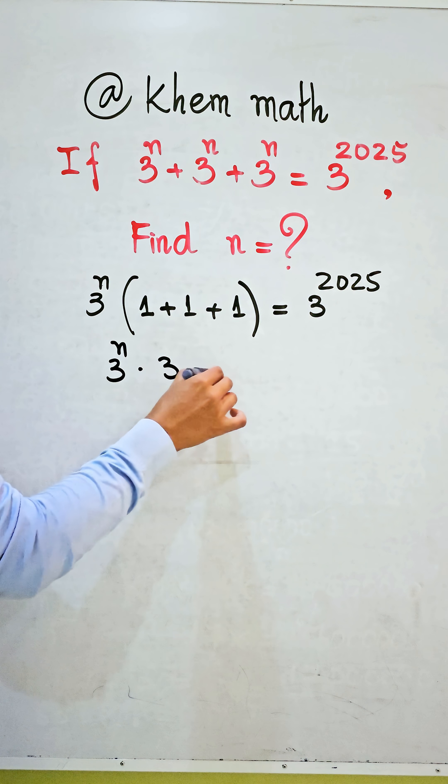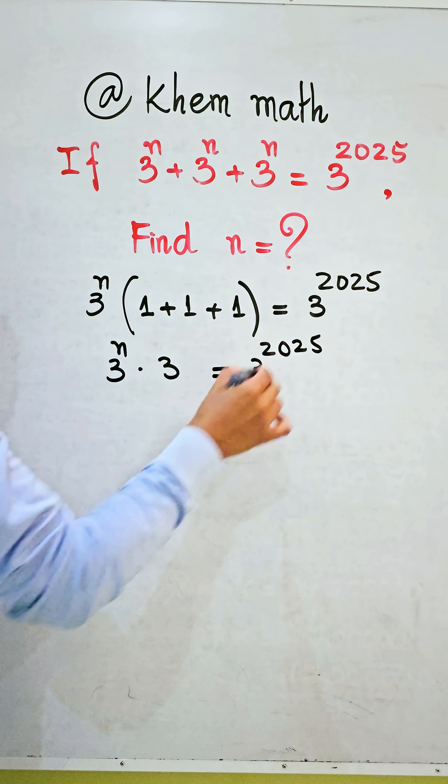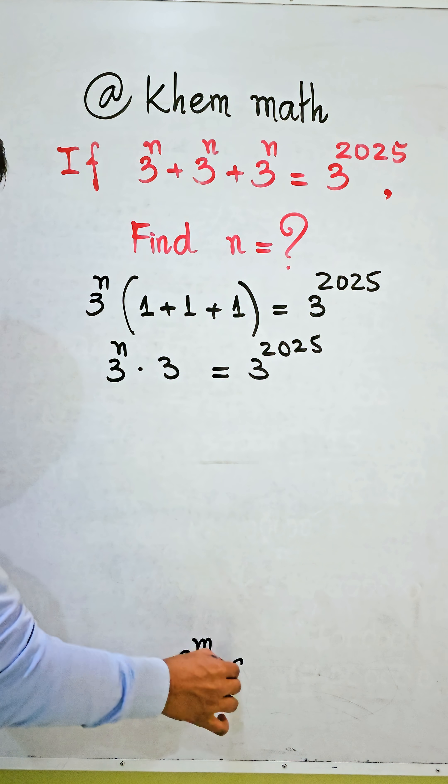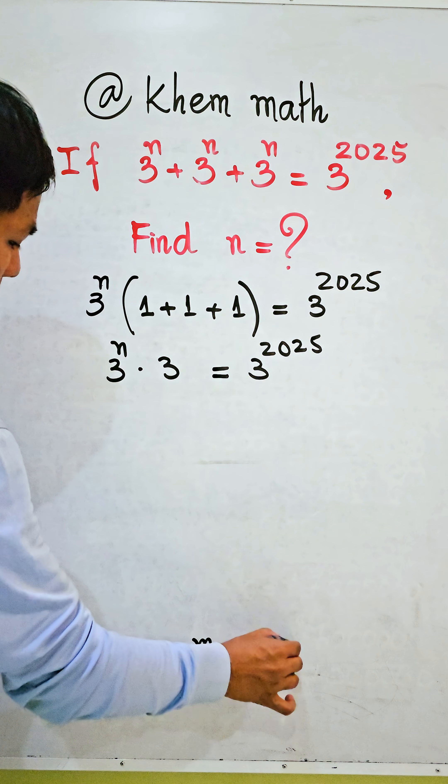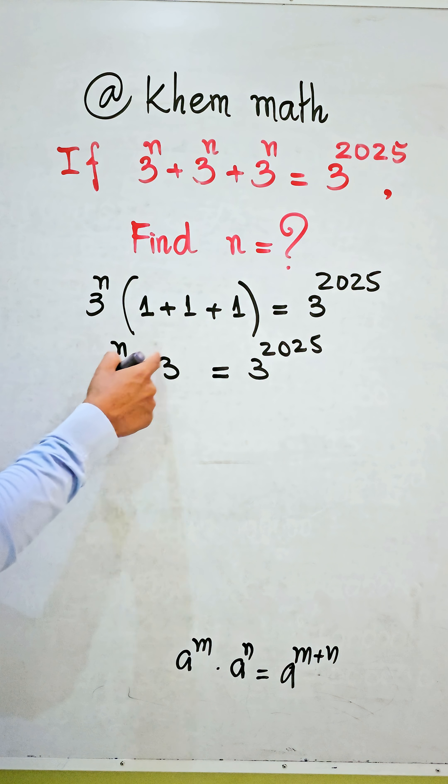Here we use the formula a power m times a power n equals a power m plus n. So here, 3 is power 1, but we don't write it. Now we get 3 power n plus 1 equals 3 power 2025.